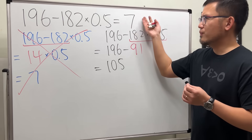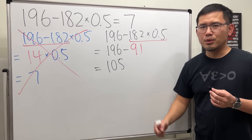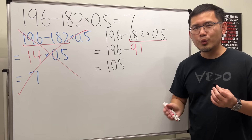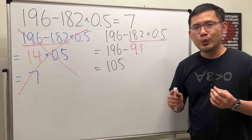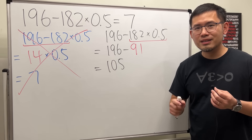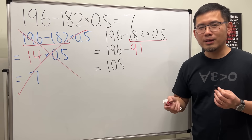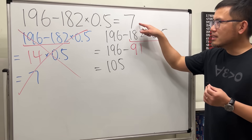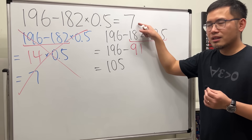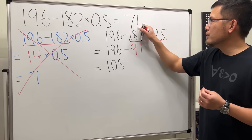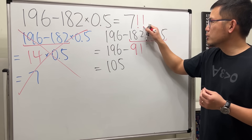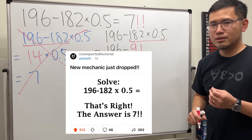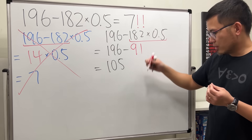So why did they say 7? Is the post wrong? Well, don't forget where we are — we're at r/unexpected_factorial. It's not just 7; it's 7 with two exclamation marks after it. So what exactly is this?